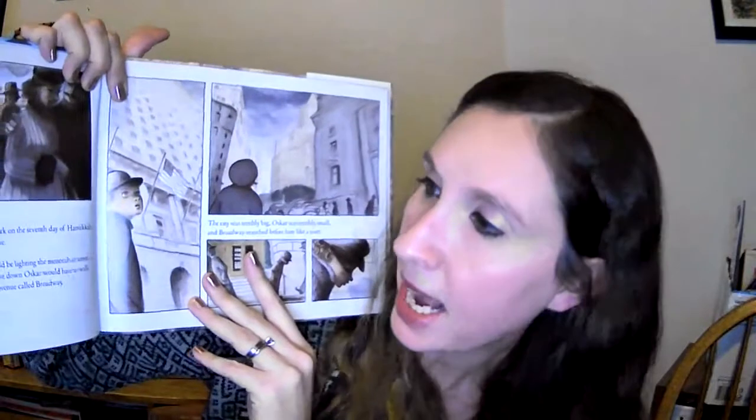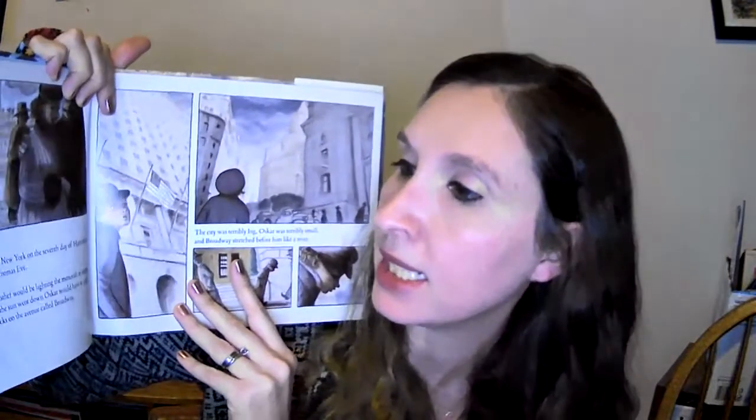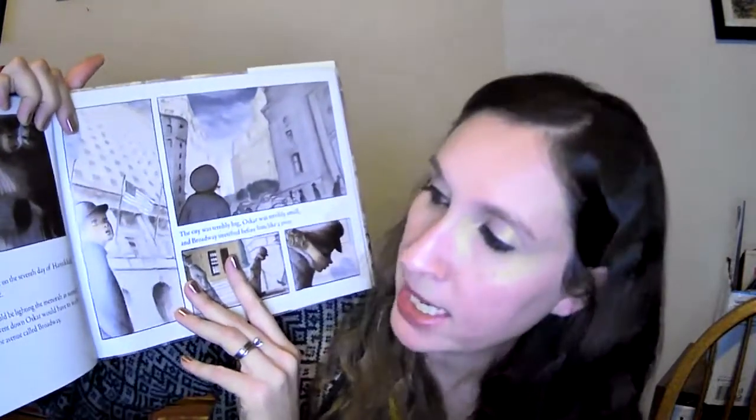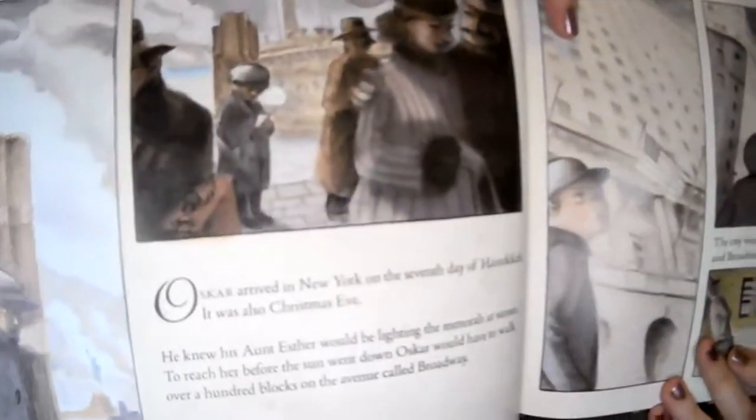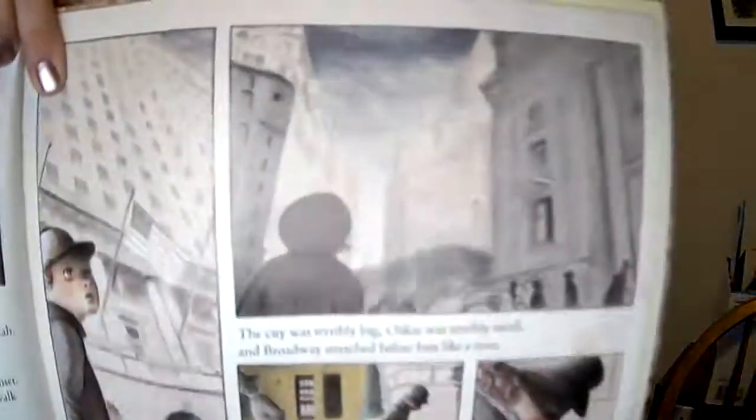Oscar arrived in New York on the seventh day of Hanukkah. It was also Christmas Eve. He knew his Aunt Esther would be lighting the menorah at sunset. To reach her before the sun went down, Oscar would have to walk over a hundred blocks on the avenue called Broadway. The city was terribly big. Oscar was terribly small and Broadway stretched before him like a river.